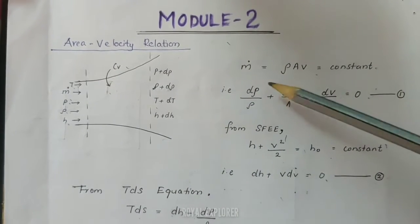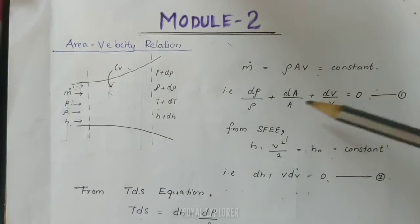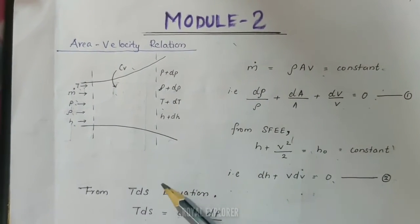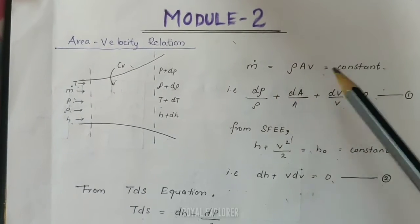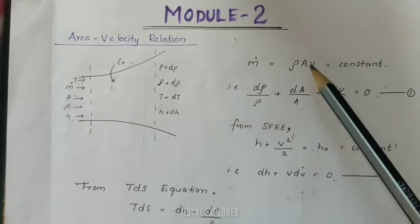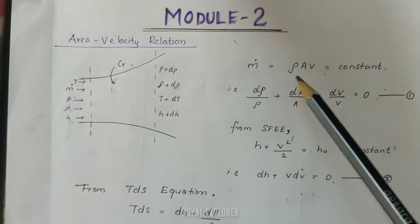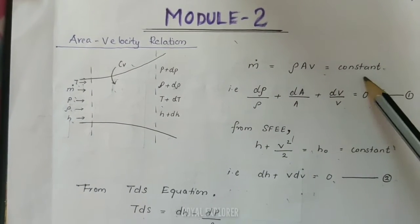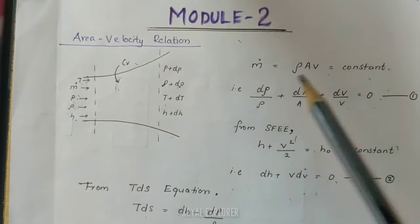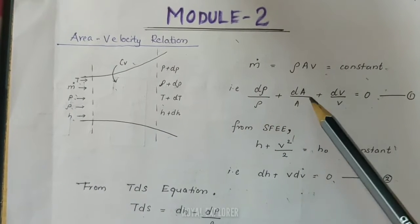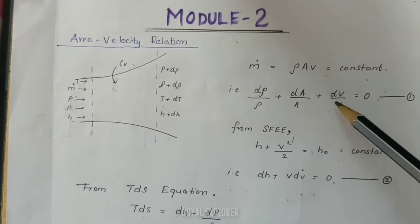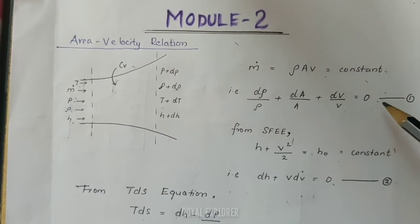First, we are going to talk about the mass flow rate. The mass flow rate is constant: M equals rho times A times V. Taking the derivative and setting it to zero gives: d-rho by rho plus dA by A plus dV by V equals 0.